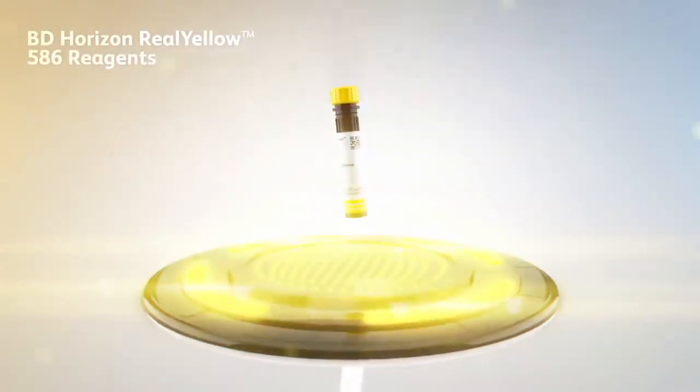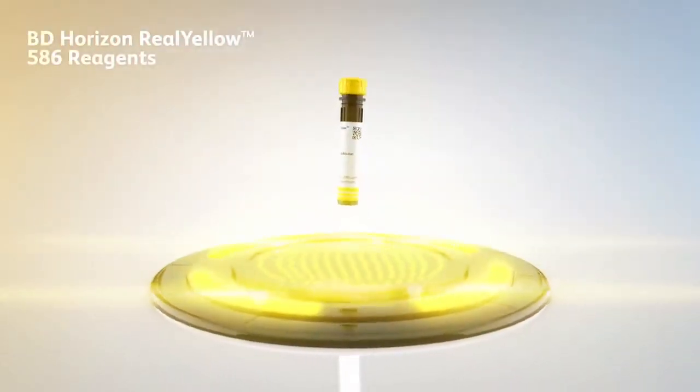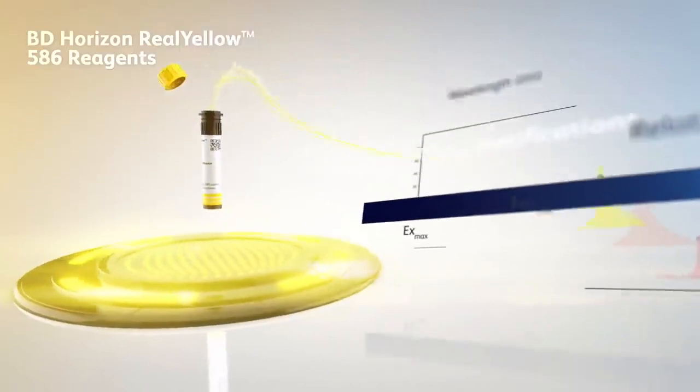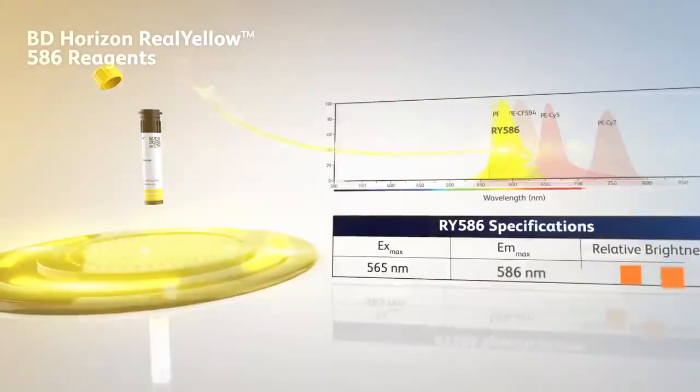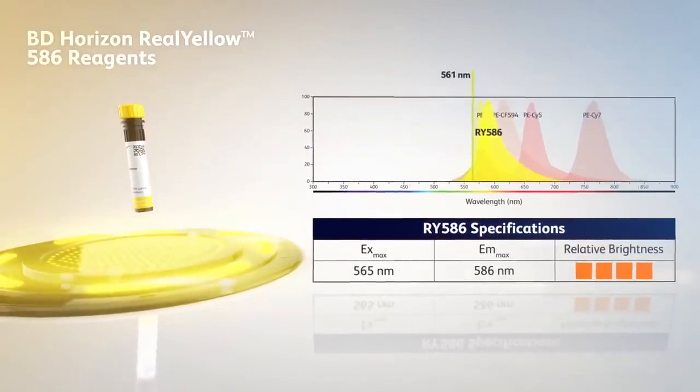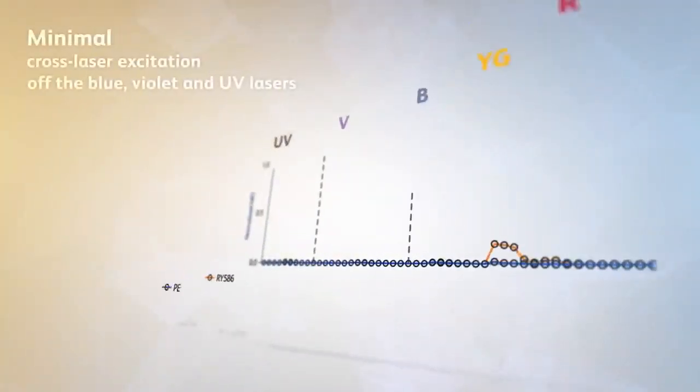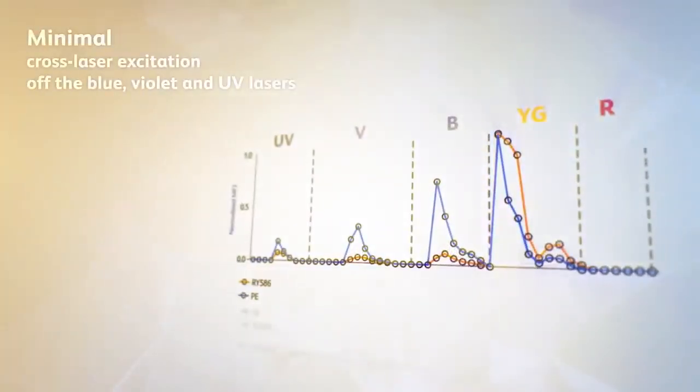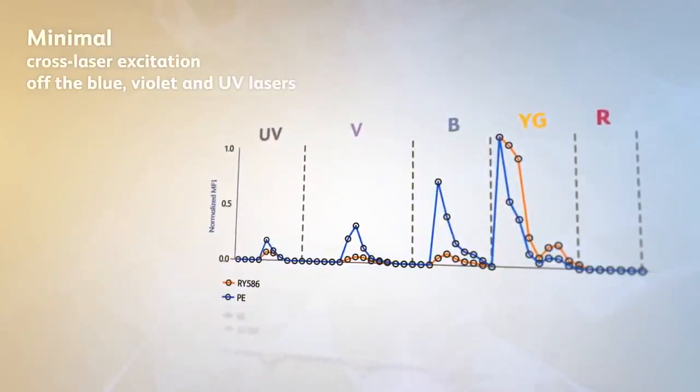The first set of reagents released is BD Horizon Real Yellow 586 reagents, leveraging an innovative laser-specific fluorochrome excited primarily by the 561 nanometer yellow green laser, offering minimal cross-laser excitation off the 488 nanometer blue, violet, and UV lasers.